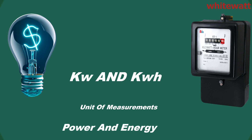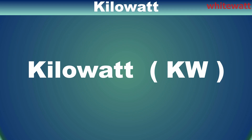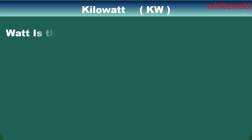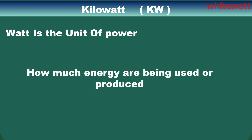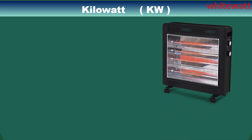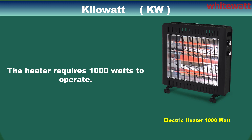Kilowatt is the unit of power, which is a measure of how much energy is being used or produced at a given moment. One kilowatt is equal to one thousand watts. Power is the rate at which energy is generated or consumed. For example, if you have a one kilowatt appliance,